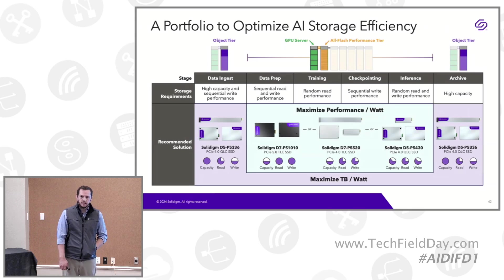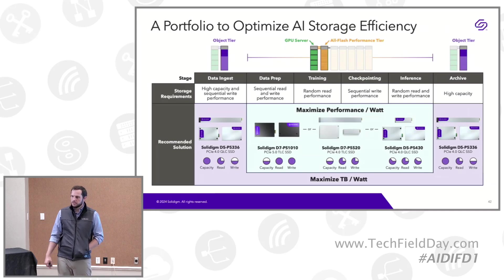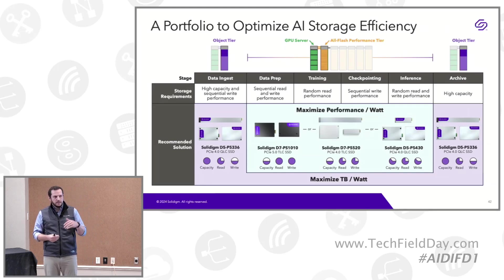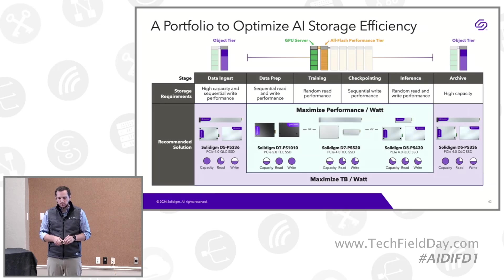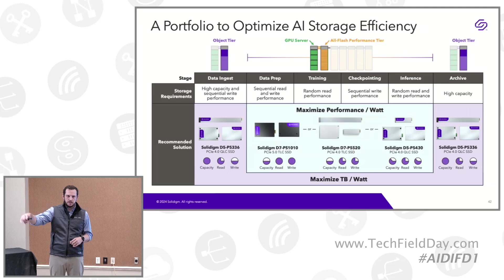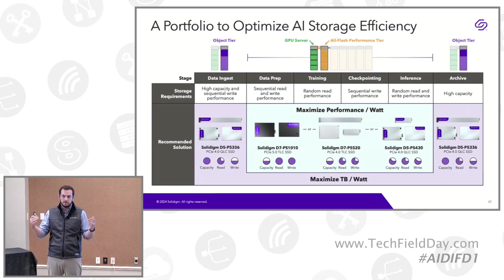We are making generation-over-generation improvements to density in a way that hard drives simply are not, and that disparity will continue to grow over time. We think high-density QLC is a no-brainer for the beginning and end of the pipeline — for ingest, where you're pulling in lots of raw unstructured data, and for the archive at the end where you're saving massive quantities of data.